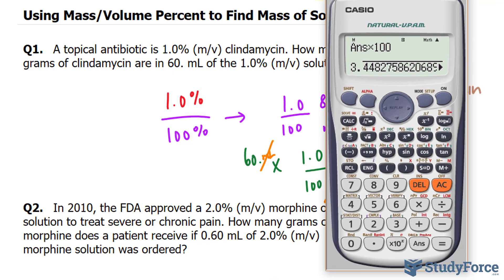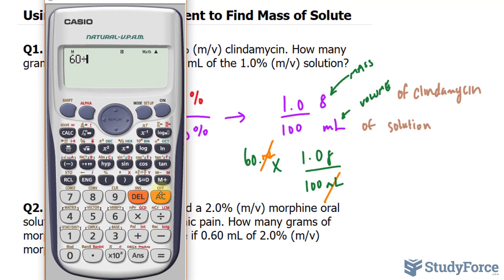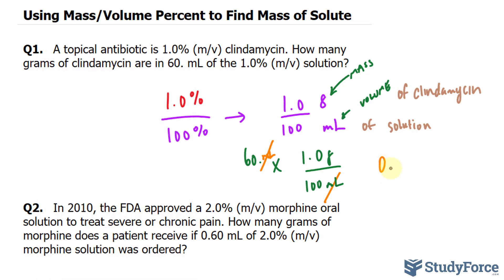Using our calculator: 60 times 1 divided by 100. I took 60 times 1 — which is just 60 — and divided by the denominator 100, and I end up with 0.60. We want this to two significant figures because both given values have two significant figures, so the answer is 0.60 grams of clindamycin.